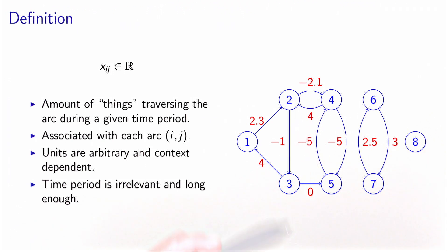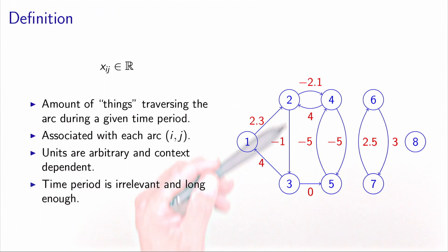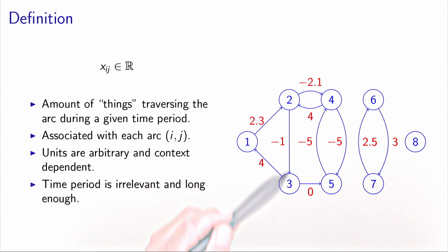Similarly, we have one unit of flow that goes from 3 to 2 using this arc, so the associated flow is negative. The interpretation is: a positive flow goes in the direction of the arc, and a negative flow goes against the arc.